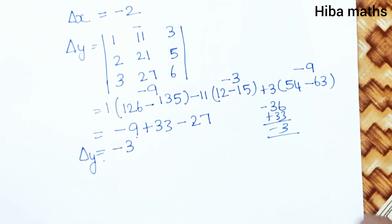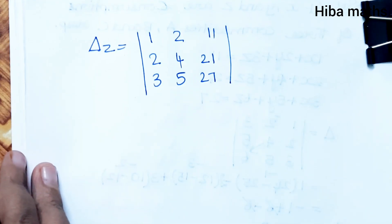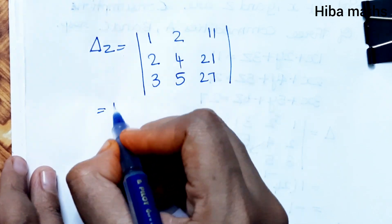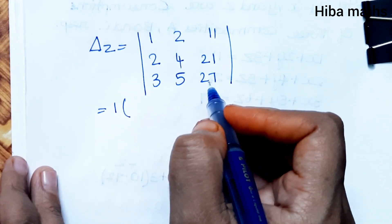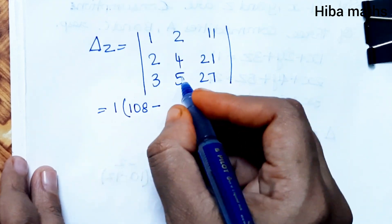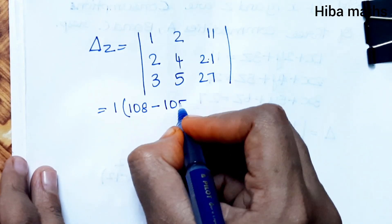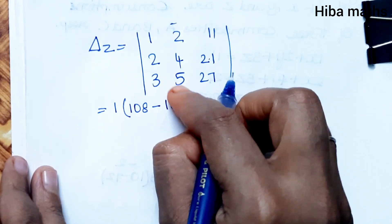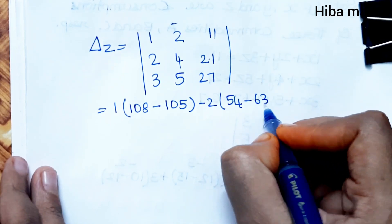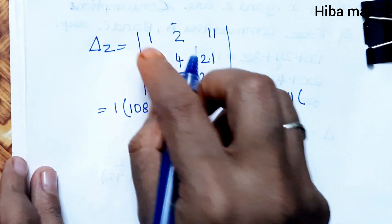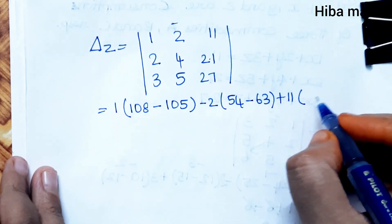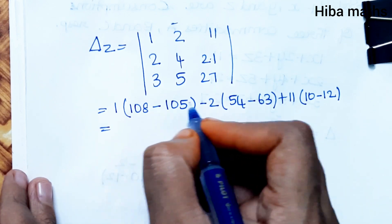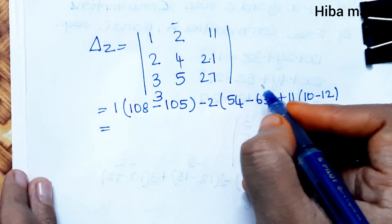Del Z: Replace the last column. Expand: 1 into (4×27 minus 5×21) = 1×3 = 3. Minus 2 into (2×27 minus 3×21) = -2×(-9) = +18. Plus 11 into (2×5 minus 4×3) = 11×(-2) = -22.